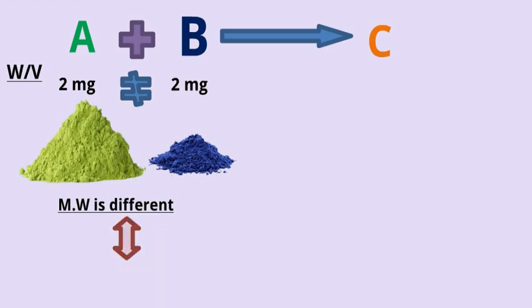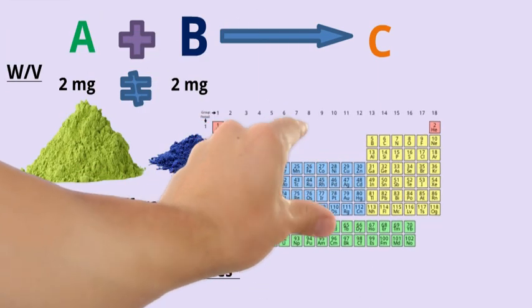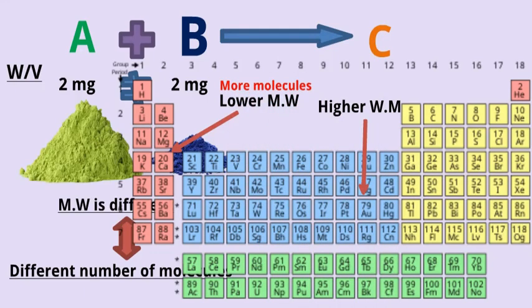So we end by getting a different number of molecules of A from B. In other words, 2 g of gold is different from 2 g of calcium because gold has a higher molecular weight than calcium. So 2 g of the lighter element, in this case calcium, contains more molecules than 2 g of the higher molecular weight element like gold.